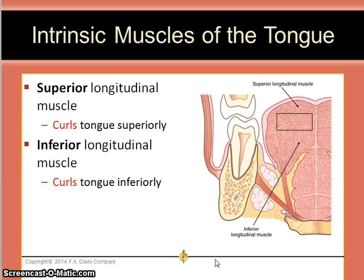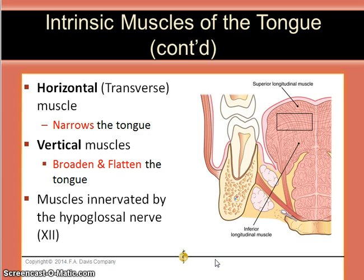Intrinsic muscles are muscles that originate and insert within the tongue itself. There are two longitudinal muscles: the superior, which curls the tongue superiorly, and the inferior, which curls the tongue inferiorly. The horizontal or transverse muscle narrows the tongue, while the vertical muscles broaden and flatten the tongue. These are also innervated by the hypoglossal nerve.